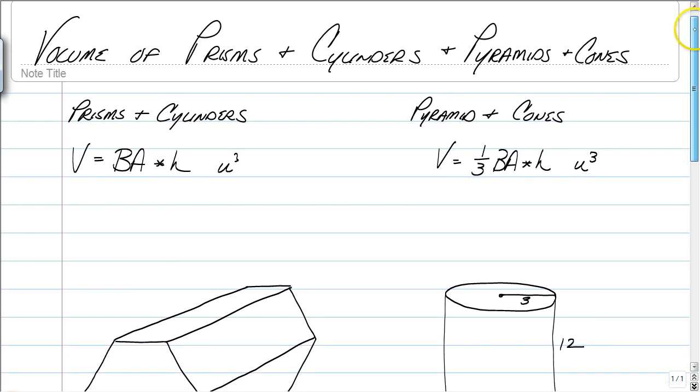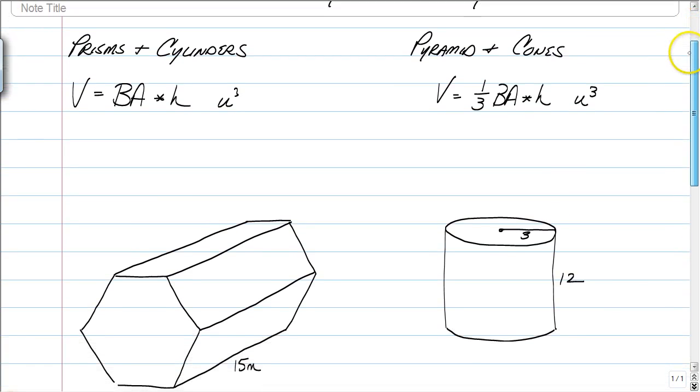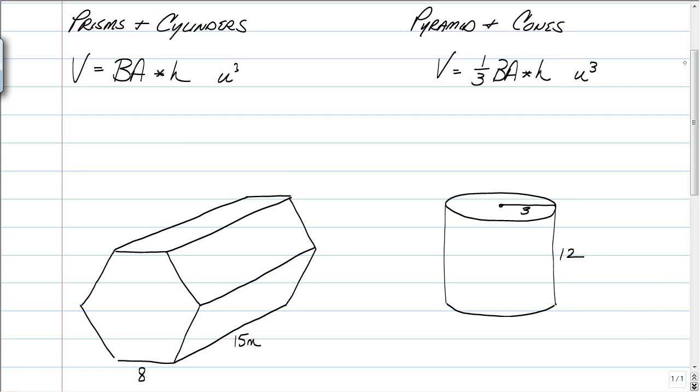Many would argue that volume is much easier to work with than surface area, and I agree in many ways because all you have to do is multiply the base area times the height. If you're working with a pyramid or a cone, of course, it's one-third the base area times the height.